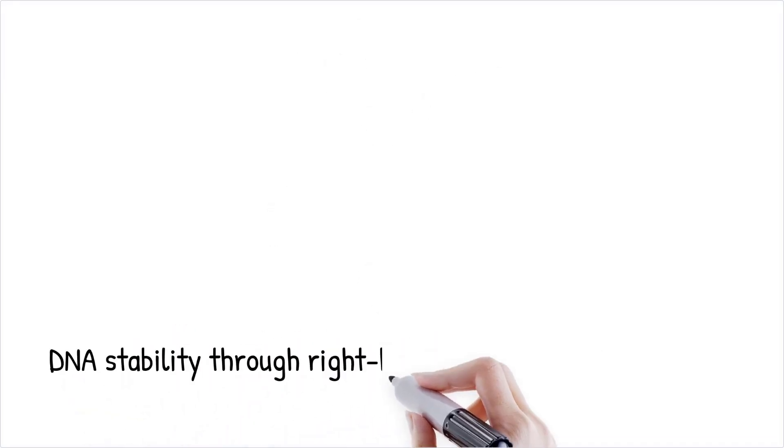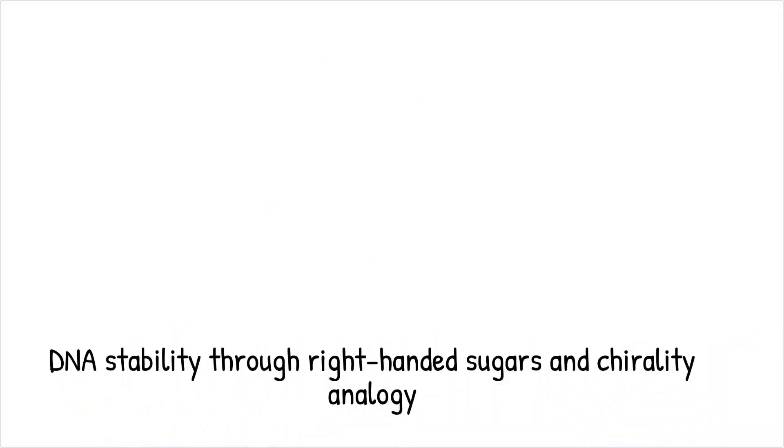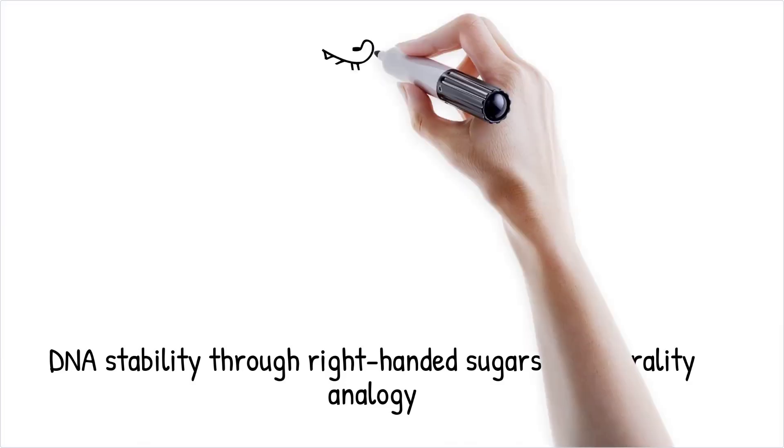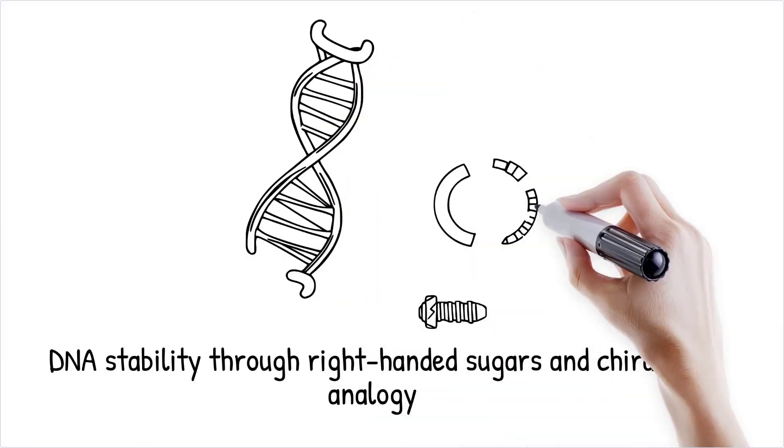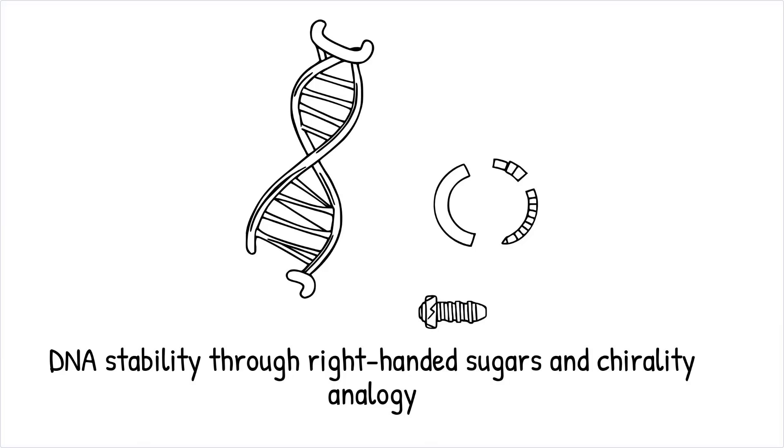DNA's double helix is stable because it uses right-handed sugars. Substituting left-handed sugars would disrupt its structure. Life's preference for specific chirality is like always using screws that turn clockwise—switching to counterclockwise screws would require redesigning the entire toolbox.